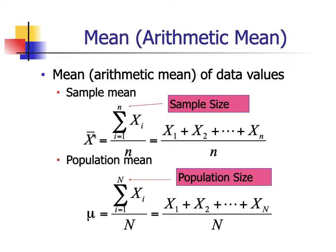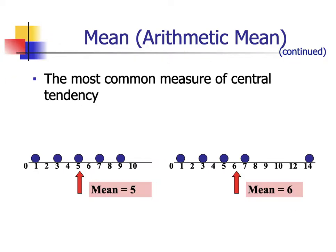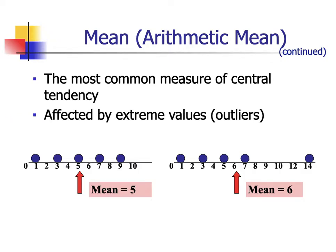For the sample mean, we use x-bar — the summation of all x sub i's divided by n, expanded from x1 up to xn. The same concept applies to the population mean, dividing the sum by population size N to get the population mean. The mean is the most common measure of central tendency, and it is affected by outliers or extreme values. Let us refer to a data set: 1, 3, 5, 7, and 9. The mean is 1+3+5+7+9 = 25, divided by 5, giving a mean of 5.